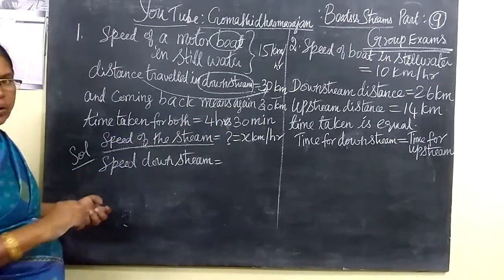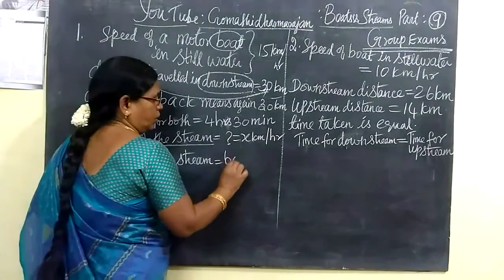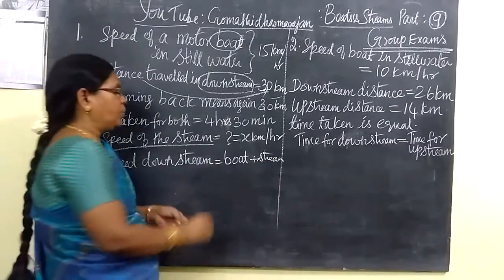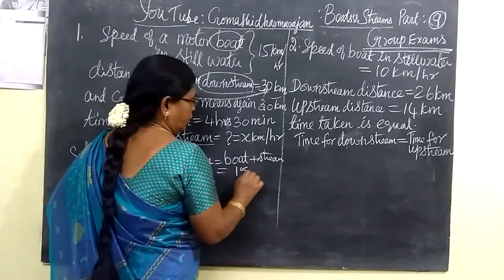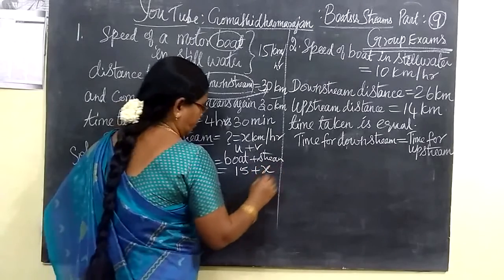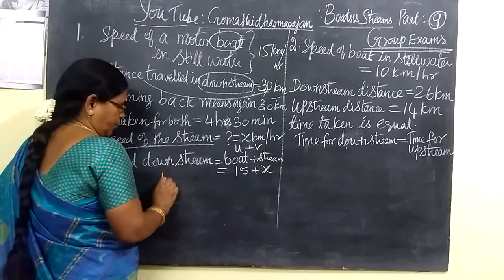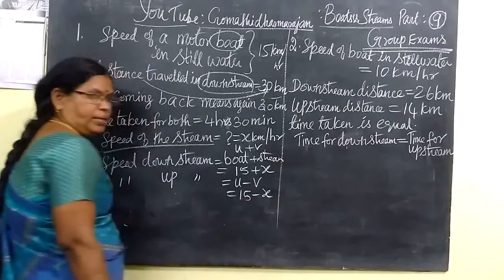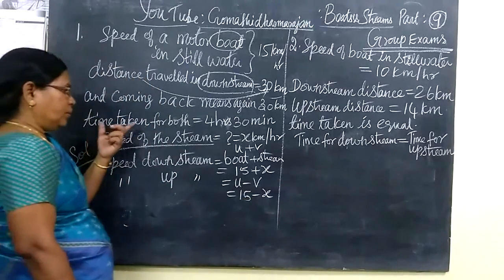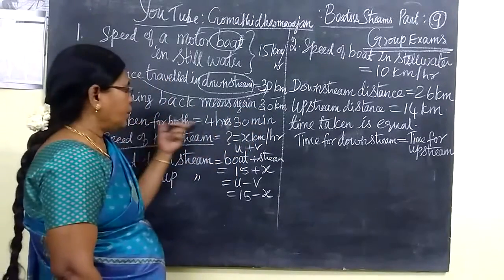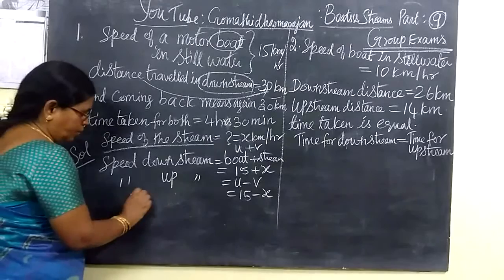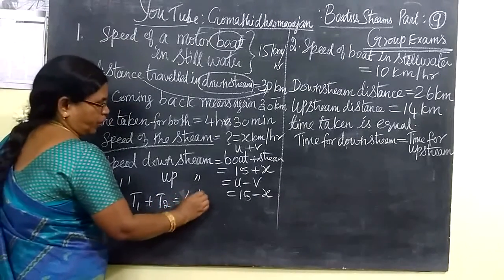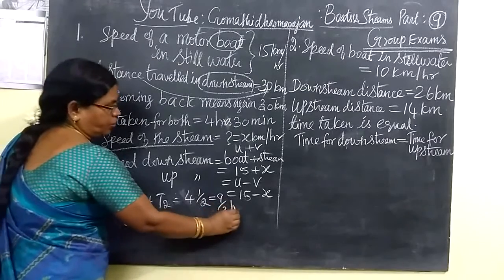We know the problem. Speed downstream is equal to boat speed plus stream speed, that is u plus v. Both our boat speed is 15, so downstream speed is 15 plus x, where x is the stream speed we have to find. Speed upstream is equal to u minus v, that is 15 minus x. Distance is given as 30 km. Time taken is 4 and a half hours, which equals 9 by 2 hours.